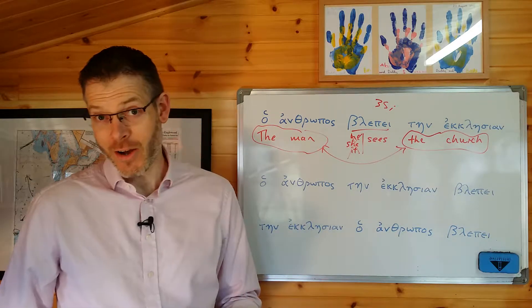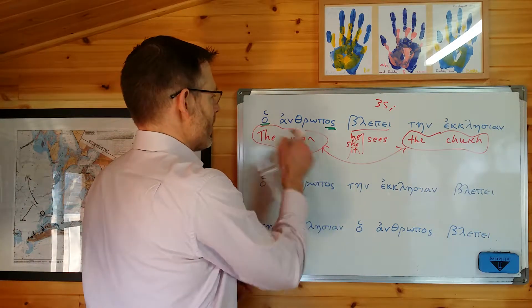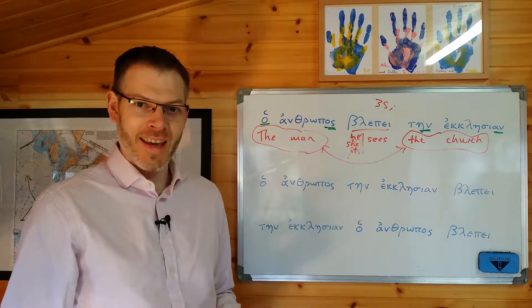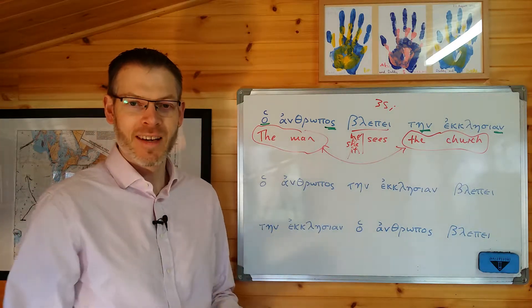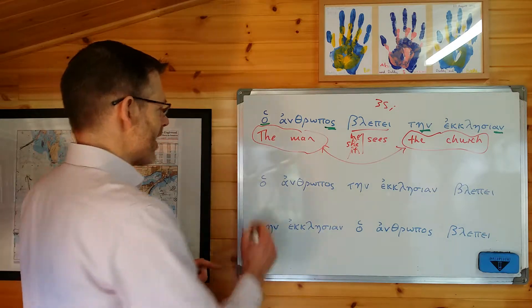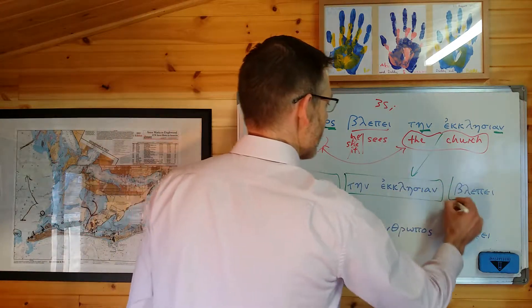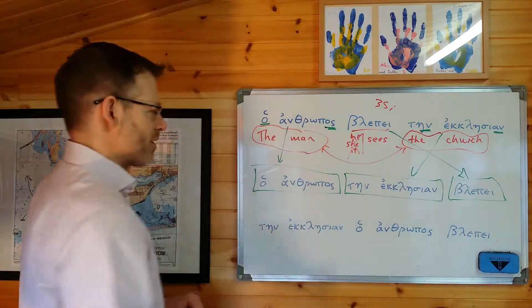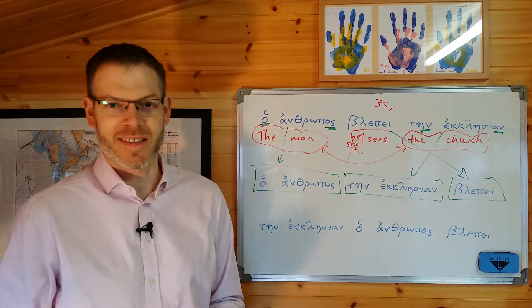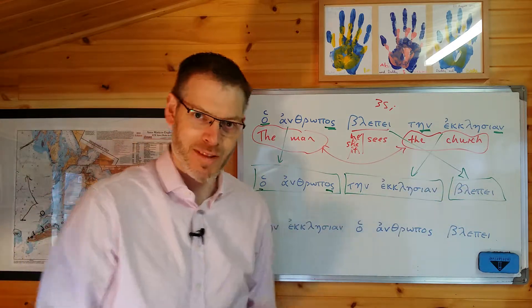However, in Greek that isn't so. In Greek, the subject and the object are determined by the case endings — nominative and accusative — which means that theoretically you could jumble up the word order a little bit and the subject and object would remain unchanged. So for example, you could write the sentence as: ho anthropos, tēn ekklēsian, blepei — switching them around. The man, the church, he sees. The person doing the seeing is the same — the man, the subject. The thing being seen is the same — the church — and the verb is the same, it hasn't changed at all.